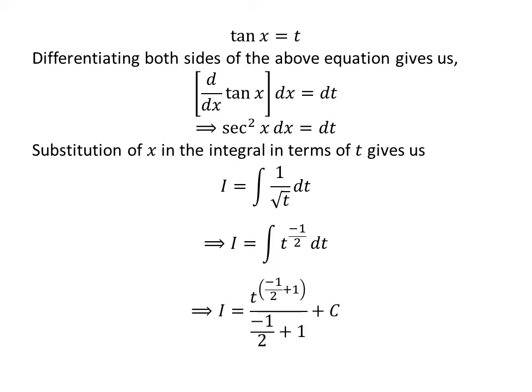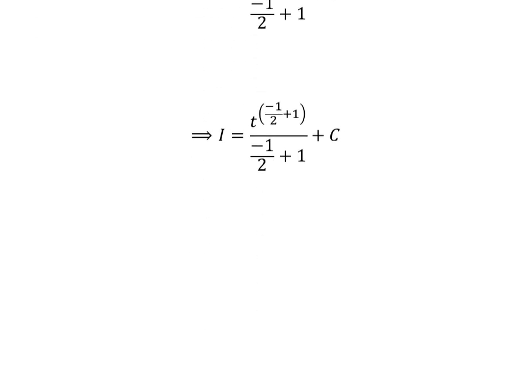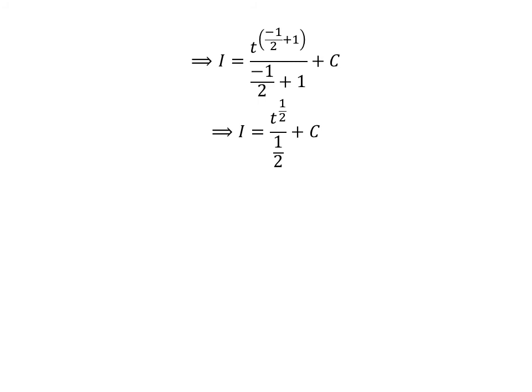We know the integral of t raised to the power of minus half is t raised to the power of minus half plus 1 upon minus half plus 1. So i is equal to t raised to the power of minus half plus 1 upon minus half plus 1 plus capital C. Capital C is the arbitrary constant of the indefinite integral — never forget to add this constant. Minus half plus 1 is equal to half, so i is equal to t raised to the power of half upon half plus capital C.